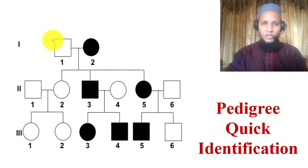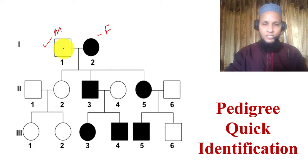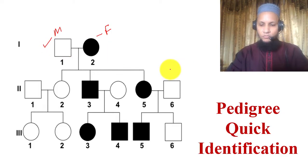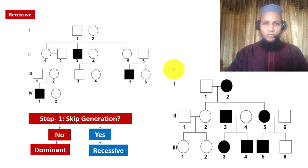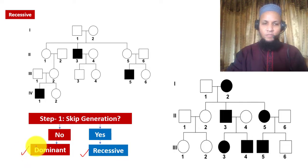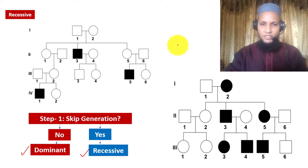In pedigree, the square indicates male and the circle indicates female. If any square or circle is colored, it indicates disease; if not colored, they may be unaffected or carrier. For identification of the pedigree pattern, we will ask some questions. First, we will determine whether it is recessive or dominant, then whether it is autosomal or X-linked.